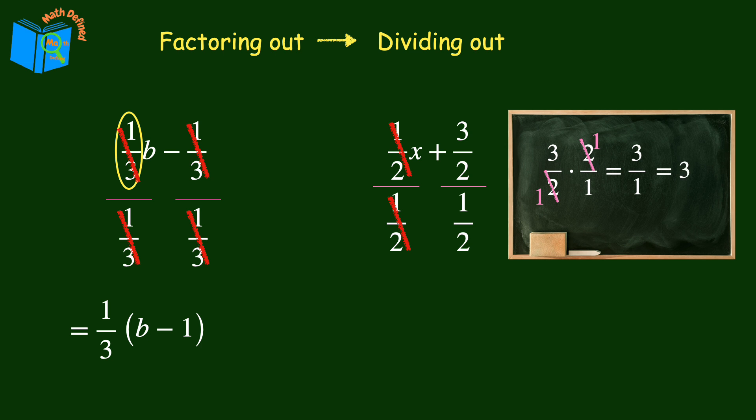After dividing both of these terms by the coefficient one-half, we are left with x plus 3. And we'll bring down the coefficient, and that's it. We're done.